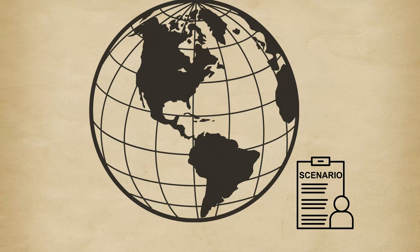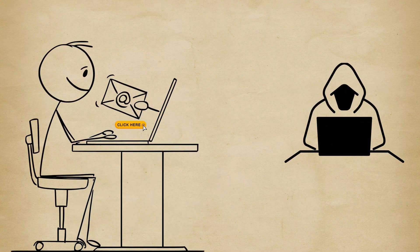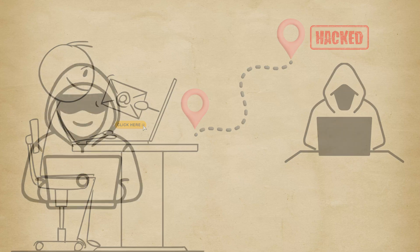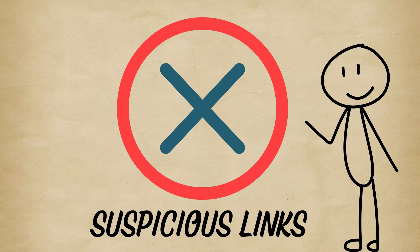Real-world scenario? Imagine a scammer DMs you pretending to be tech support. You click their link, and suddenly they have your location. Ethical hackers use this method to track cybercriminals, but it's also why you should never click suspicious links.